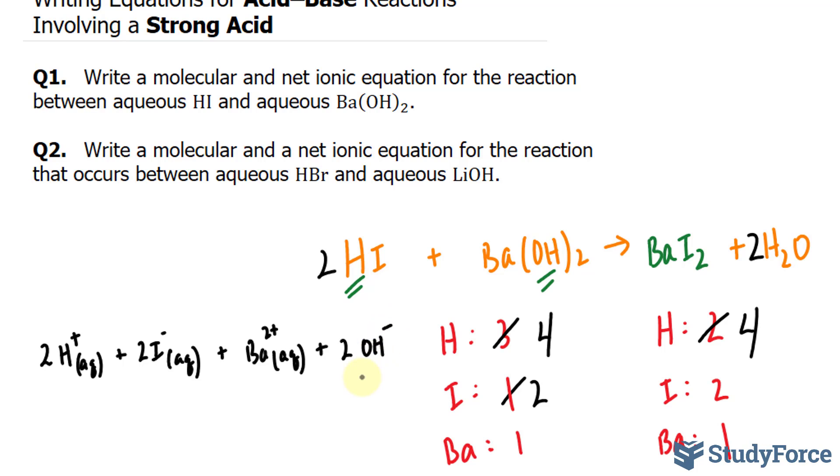That's a polyatomic ion. This forms the dissociated version of this compound, which is Ba2+ plus two iodine ions in aqueous. And of course, water, which is a liquid, so that doesn't dissociate. 2H2O(l).